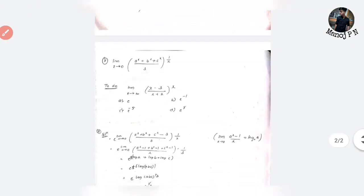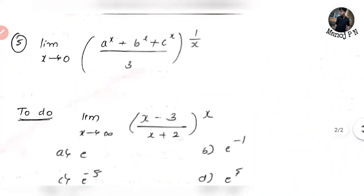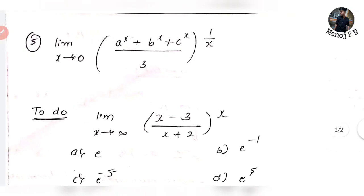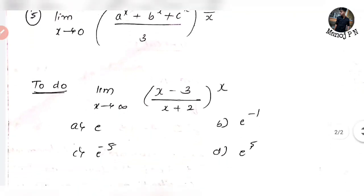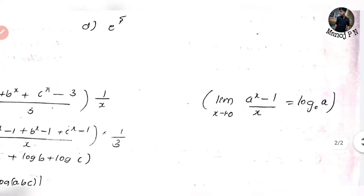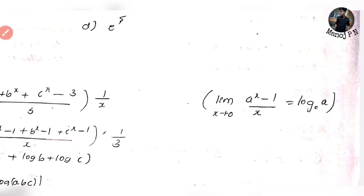Look at the fifth question, which is one of the most important and tricky questions. We have to use the logarithm formula. The question is: limit x tends to 0 of (a^x + b^x + c^x)/3 whole raised to power 1/x. As I told you, we apply a different formula here. An important formula is: limit x tends to 0 of (a^x − 1)/x = log base e of a (i.e., ln a). This is the key formula.